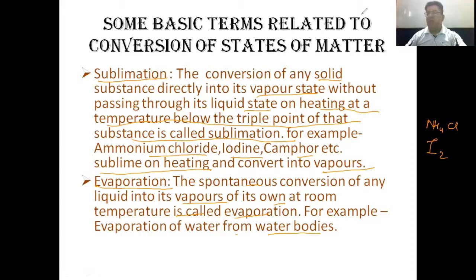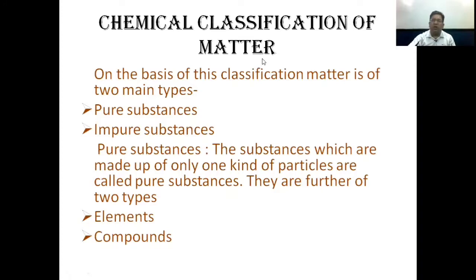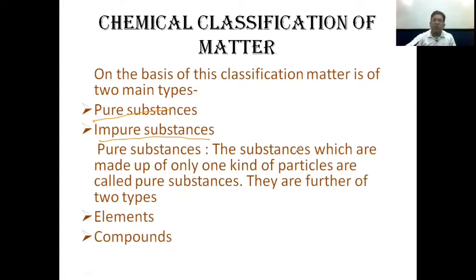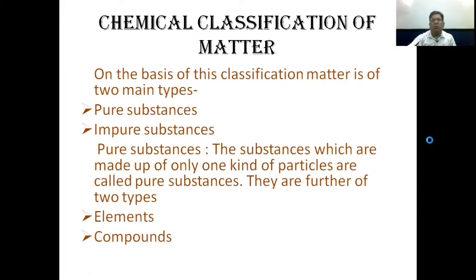Next is the chemical classification of matter. On the basis of this classification, matter is mainly of two types: one is pure substances and second is impure substances. Pure substances are those which are made up of only one kind of particles. Pure substances are further of two types: one is elements, and second is compounds.